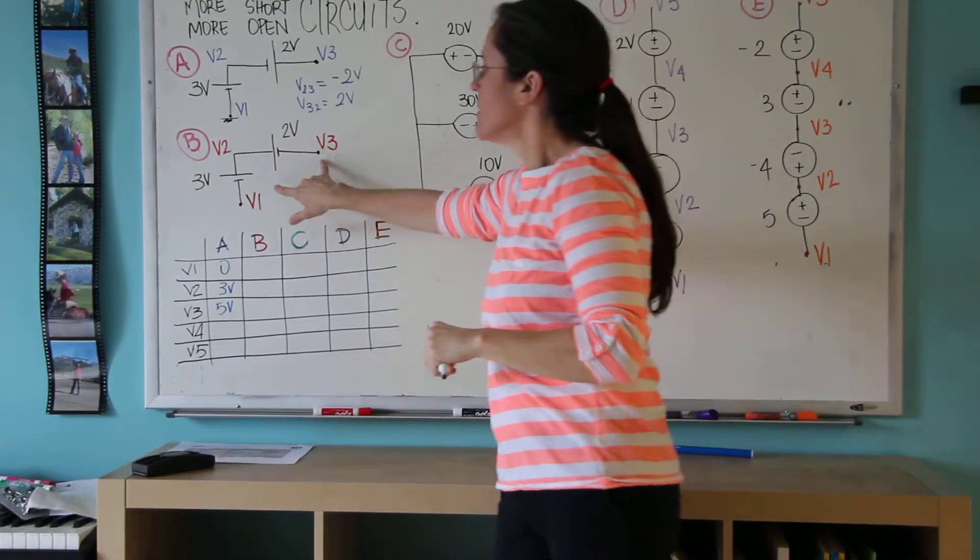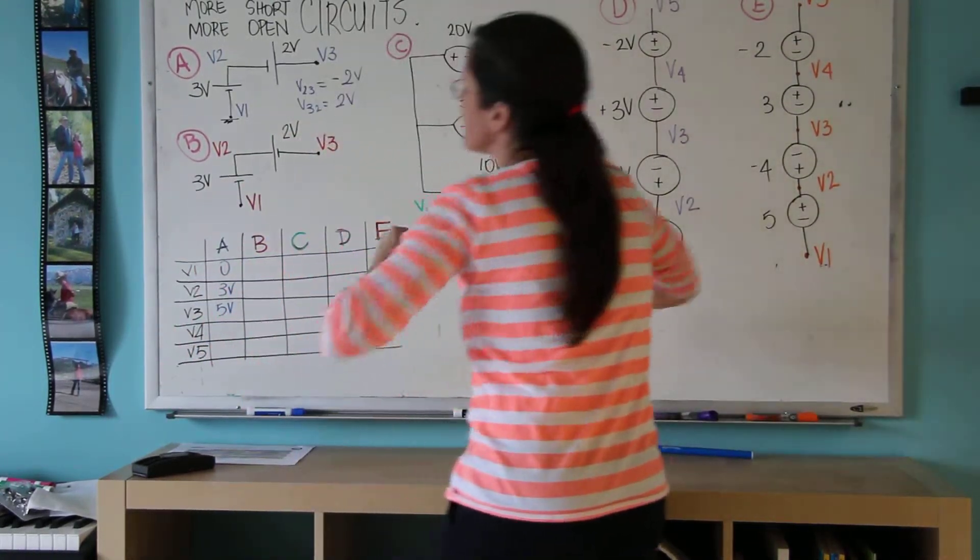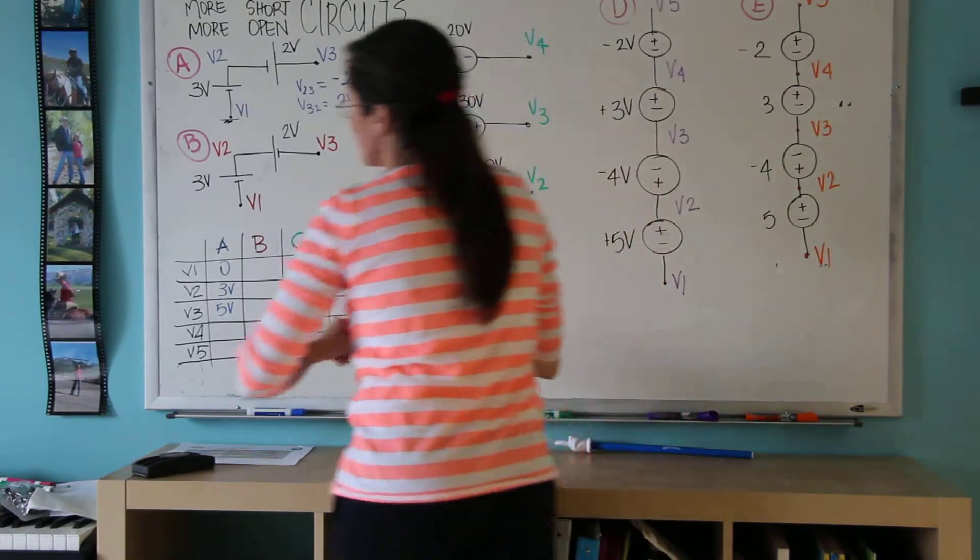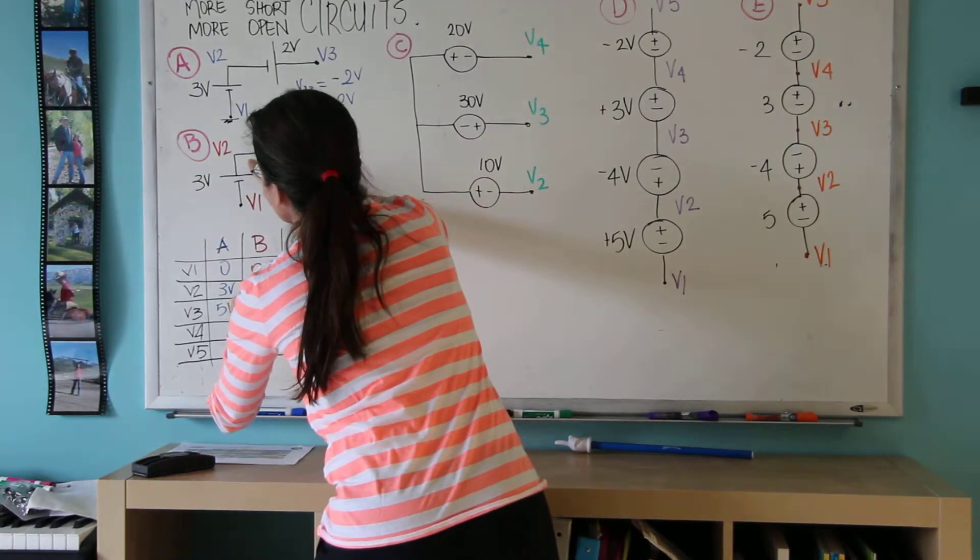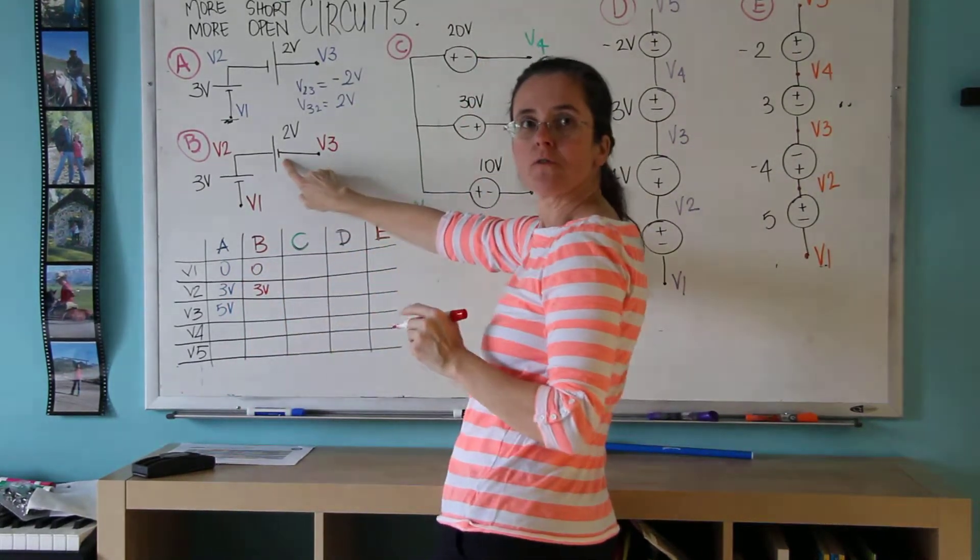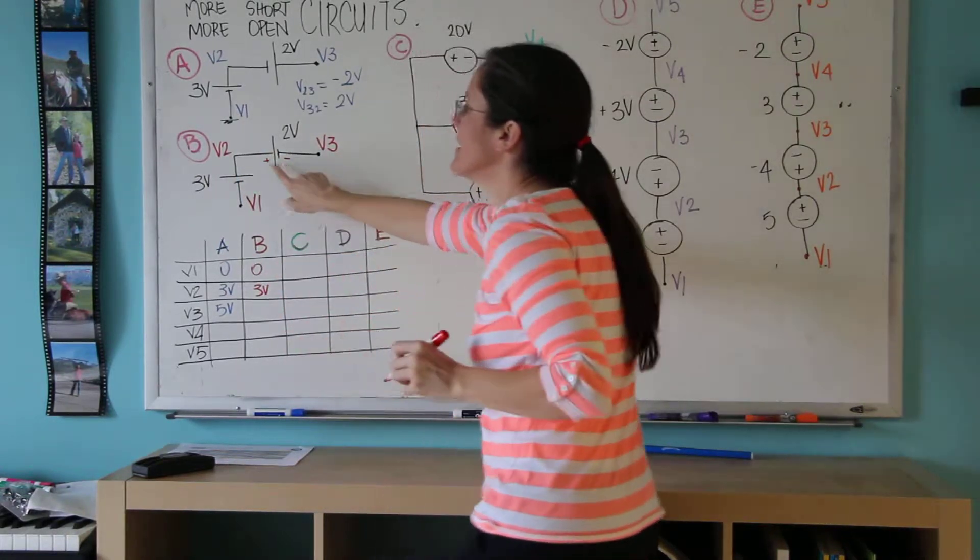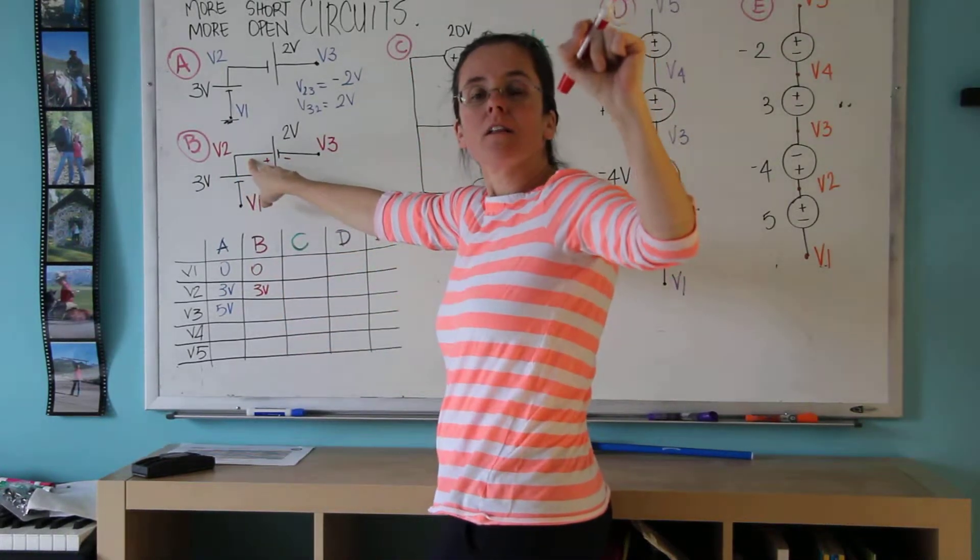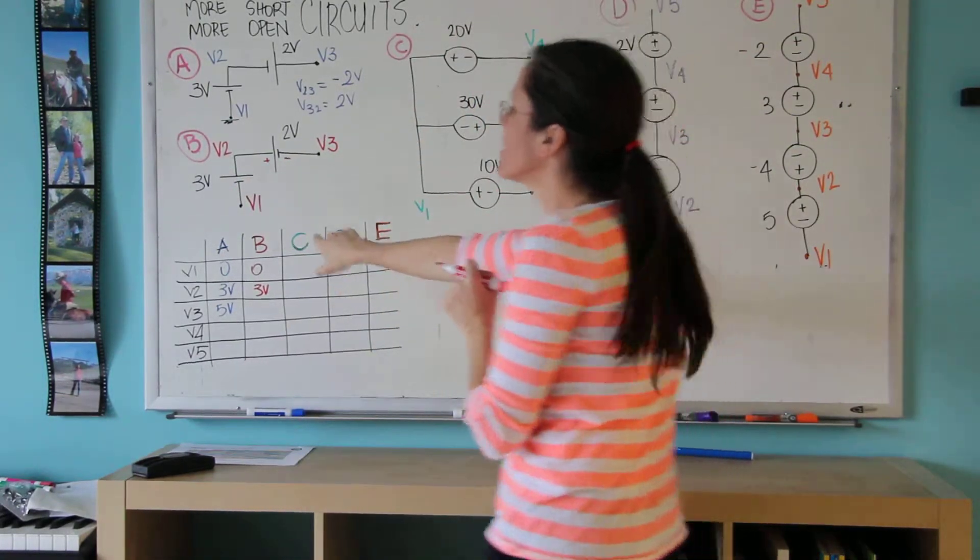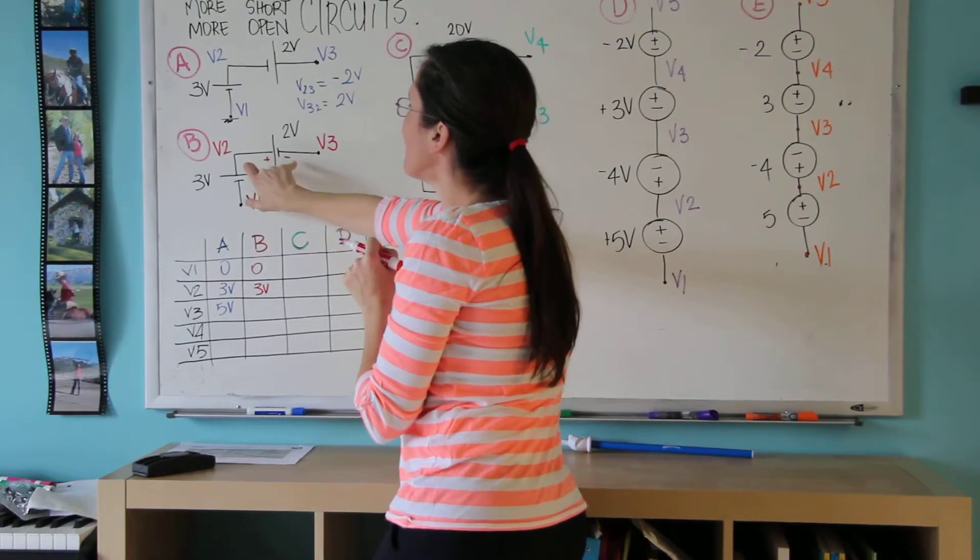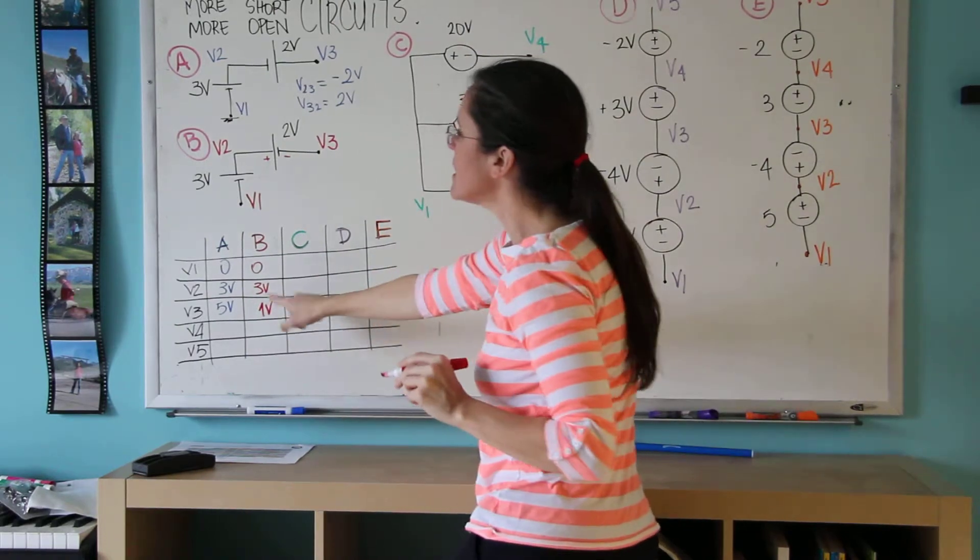Now let's do the same thing with circuit B. I'm going to call this time, again V1 0 volts, and therefore V2 is going to be 3. But now watch, this 2 volts has the plus on this side and the minus on this side. This means that node V2 is 2 volts above node V3. So this minus this needs to be 2 volts. So I conclude that V3 is 1 volt.